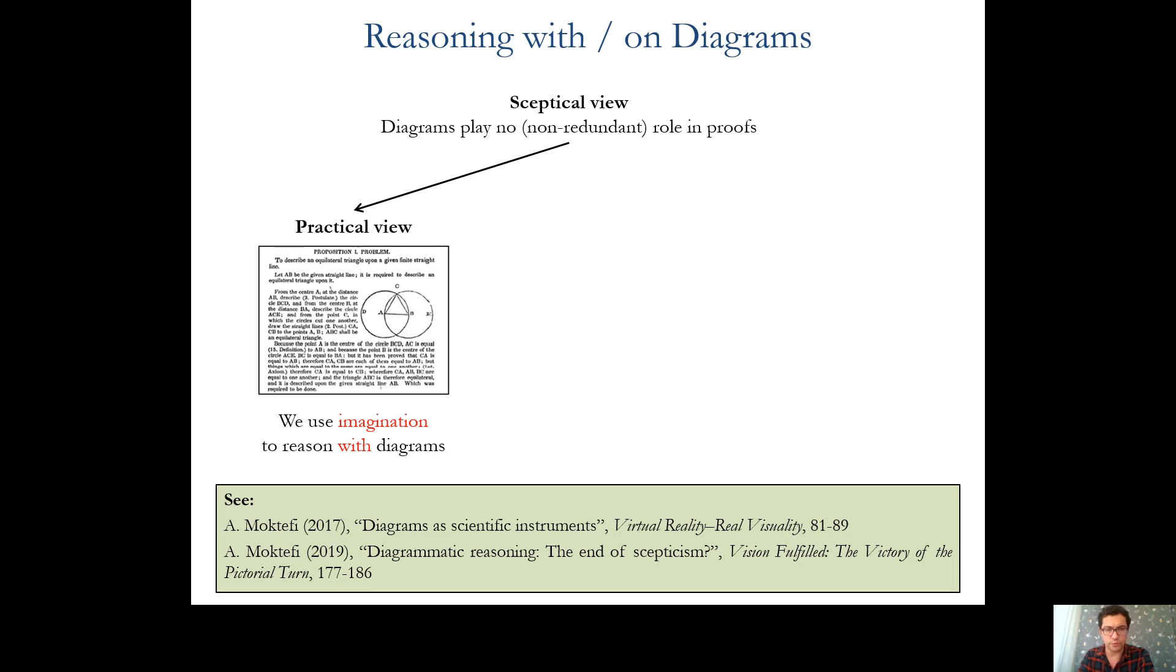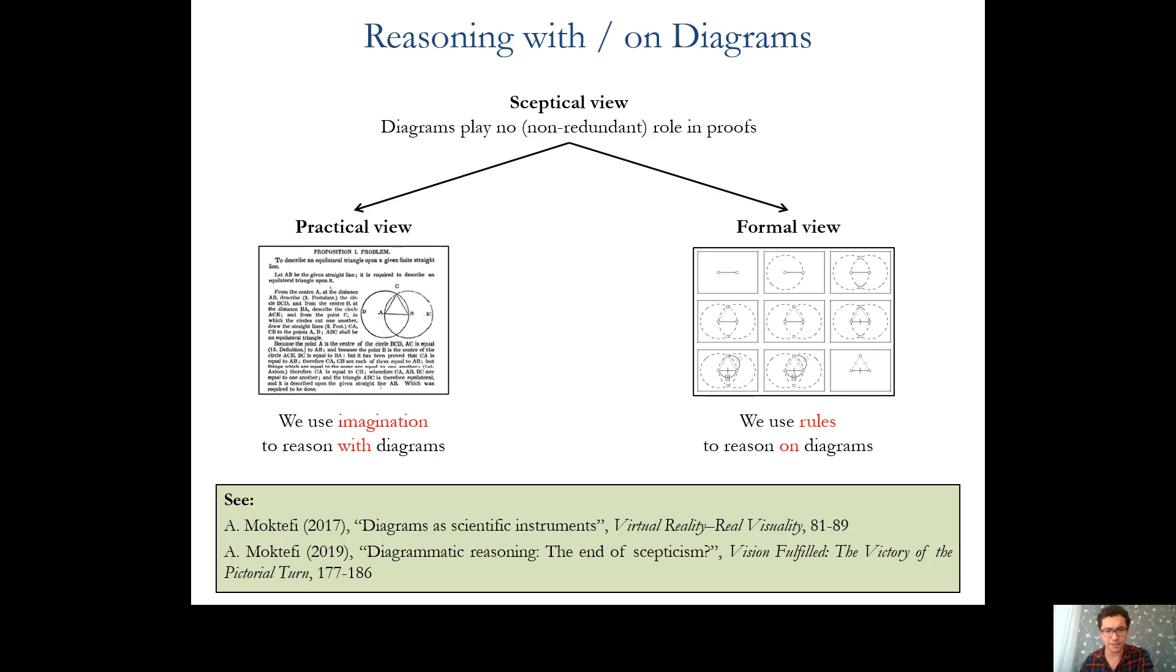We use imagination to reason with diagrams. And finally the formal view which accepts diagrams in proofs after formalizing them. The idea is to use rules to reason on diagrams.